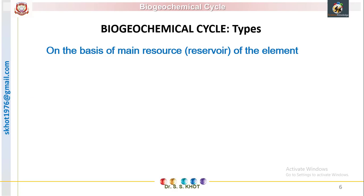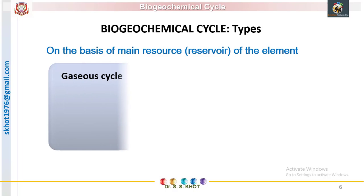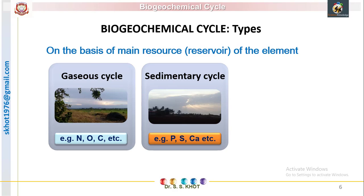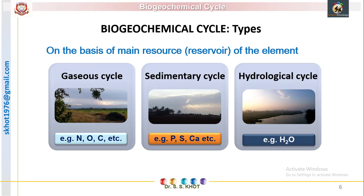On the basis of the main reservoir of a chemical element, we have three types of biogeochemical cycle. The first is the gaseous cycle, where the main source of the element is atmospheric gas — for example, nitrogen gas, oxygen, and carbon. The second is the sedimentary cycle, where elements are stored in the form of sedimentary rock, salts, or minerals — best examples include phosphorus, sulfur, calcium, and magnesium. The third is the hydrological cycle, which is the recycling of water between the lithosphere, biosphere, and geosphere.